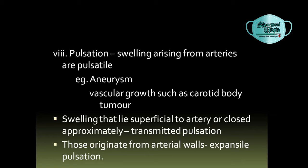Pulsation should be checked, as swellings arising from arteries are pulsatile — for example, aneurysm and vascular growths such as carotid body tumor. Swellings lying superficial to or closely approximated to an artery will have transmitted pulsation, while swellings originating from the arterial walls will exhibit expansile pulsations. In transmitted pulsation, the pulsation can be made to disappear by moving the swelling away from the aorta, whereas in expansile pulsation — present in abdominal aortic aneurysm — the fingers will diverge from the swelling and the pulsation cannot be made to disappear.